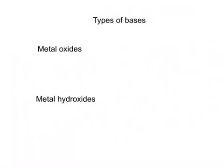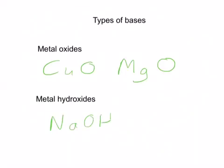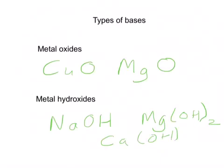Metal oxides tend to be bases, for example copper oxide and magnesium oxide. Metal hydroxides are also bases: NaOH, sodium hydroxide; Mg(OH)2, magnesium hydroxide; and Ca(OH)2, calcium hydroxide. These are common bases that you'll come across in your exam.